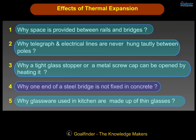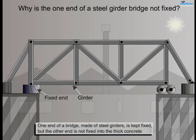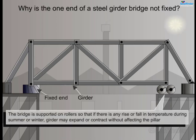Why is one end of a steel bridge not fixed in concrete? One end of a bridge made of steel girders is kept fixed, but the other end is not fixed into thick concrete. The bridge is supported on rollers so that if there is any rise or fall in temperature during summer or winter, the girders can expand or contract without affecting the pillar.